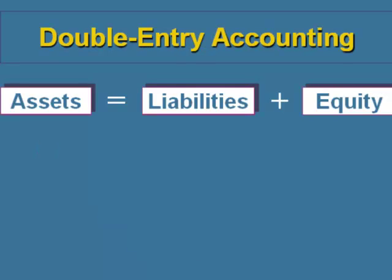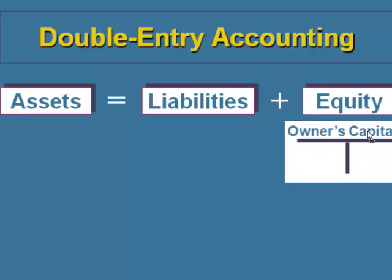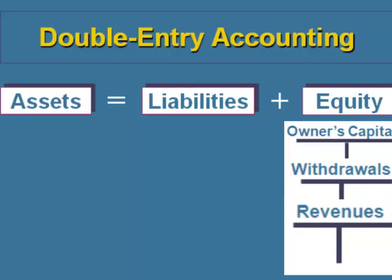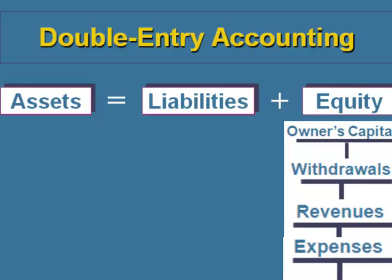When we look at the accounting equation, we have three types of accounts: assets, liabilities, and equity. We're going to expand the owner's equity section to show the types of transactions that change equity. We'll expand it to include the capital account. From now on, the only transaction we're going to put in that capital account is investments from owner. Withdrawals, revenues, and expenses are each going to be recorded separately in their own accounts.